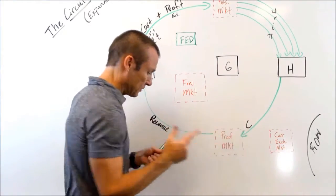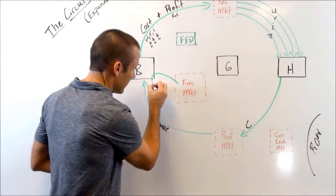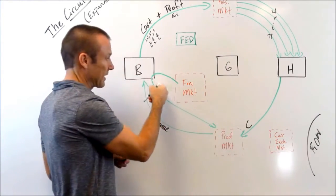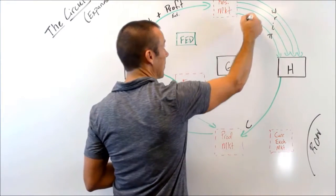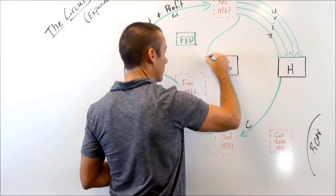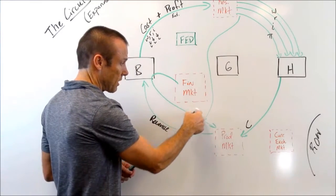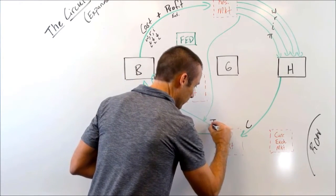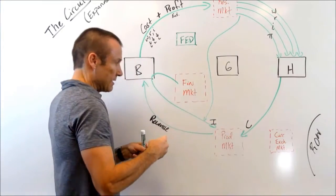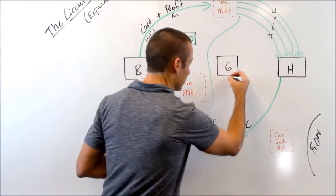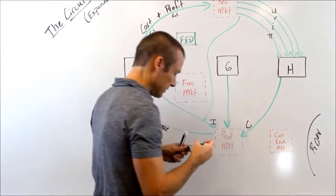So here we go. We've already got consumption. Here comes business investment. They borrow money from the financial market to do business investment. And they also use some of their profits. That's a kind of an ugly line right there. But here's them using their profits. Here's them borrowing financial capital to do investment. So C and I. Now, we've got our government purchases. There's our government purchases.